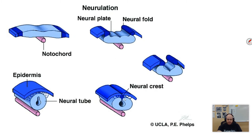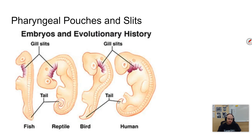It's called neurulation, where the ectoderm — the outermost layer — folds in on itself, creating a tube which is basically what would be our spinal cord, and in many other organisms their spinal cord as well. The anterior end enlarges over time and becomes the brain. Typically this dorsal nerve cord is protected by vertebrae, and in the head it's protected by a skull or cranium.